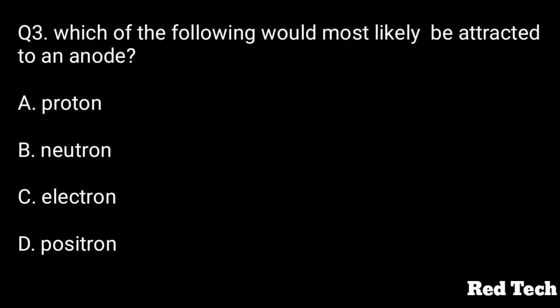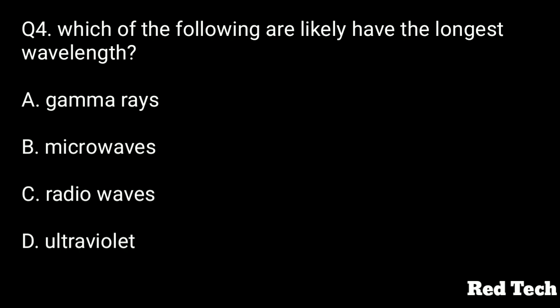Question number three: which of the following would most likely be attracted to an anode? Option A is proton, option B is neutron, option C is electron, option D is positron. The right answer is option C, electron, because the anode is positively charged, so electrons are most attracted to it.